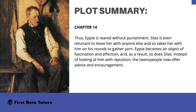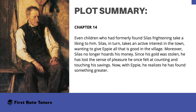Silas' growth mirrors Epi's, and he begins to explore memories and thoughts he has kept locked away for many years. By the time Epi is three, she shows signs of mischievousness, and Dolly insists that Silas not spoil her. Shortly after this conversation, Epi escapes from the cottage and goes missing for a while, though she is soon found. Silas decides that he must be stern with Epi, but his use of the coal hole is ineffective, as Epi takes a liking to the place. Thus, Epi is reared without punishment. Moreover, Silas no longer hoards his money. Since his gold was stolen, he has lost the sense of pleasure he once felt at counting and touching his savings. Now, with Epi, he realizes he has found something greater.